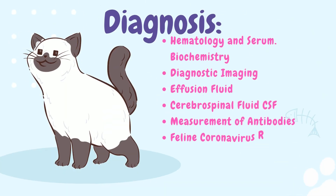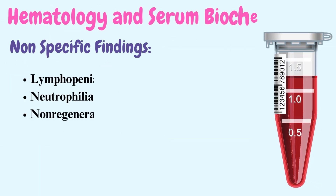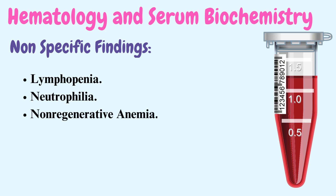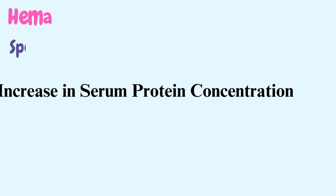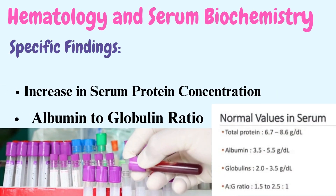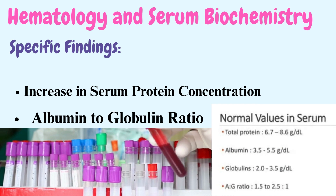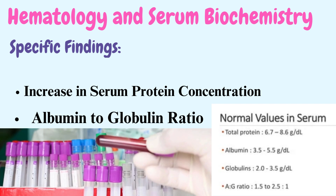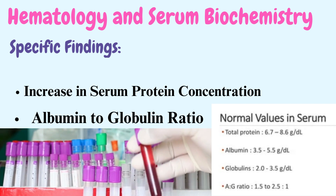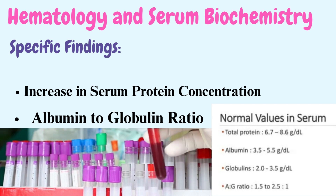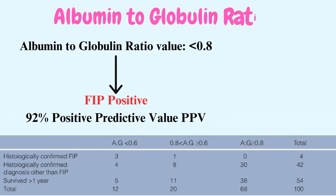Hematology and serum biochemistry: WBC counts can be decreased or increased. Non-specific findings include lymphopenia, neutrophilia, and non-regenerative anemia. A specific finding is an increase in total serum protein concentration. The albumin to globulin ratio has a significantly higher diagnostic value to distinguish FIP from other diseases. If the serum albumin to globulin ratio is less than 0.8, the probability that the cat has FIP is high — 92% positive predictive value (PPV).